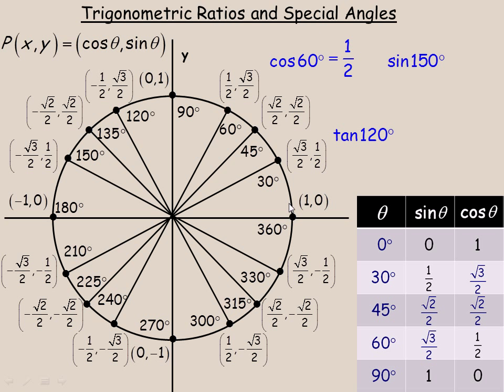For the sine of 150, we would rotate all the way over to that point, and remember the sine is the y-coordinate, so for that point, the y-coordinate is one-half, so the sine of 150 degrees is also one-half.